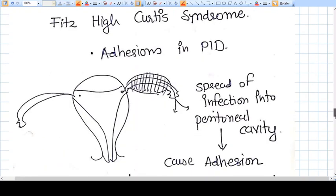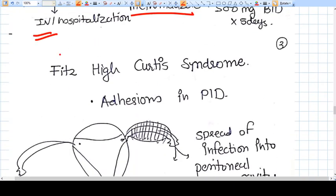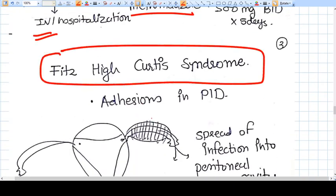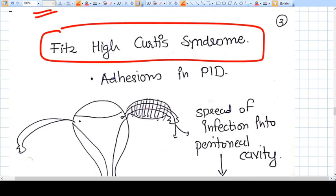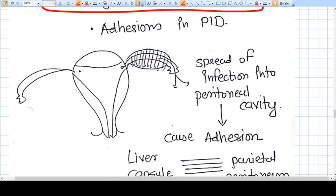Now there is one syndrome—Fitz-Hugh-Curtis syndrome. What is that? It is adhesion in PID. Whenever the infection or pus discharges from the tube into the peritoneal cavity, this will cause adhesions between liver capsule and parietal peritoneum.